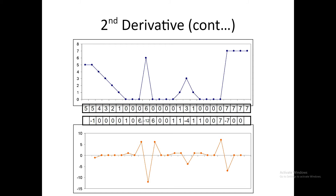Over here it becomes +6 and here it is +6. If you plot these points you will see that it is still a sharper spike — from +6 going to -12 and then again to +6, so it is a much sharper spike. The second derivative is more sensitive towards changes in the intensity values of the pixels, so wherever there is a change in intensity it becomes visible.